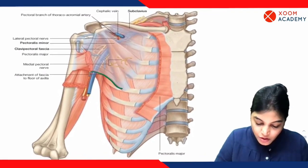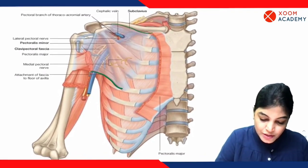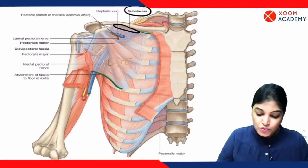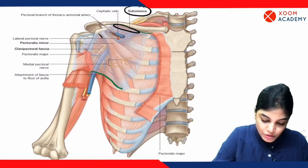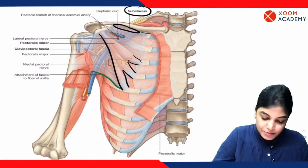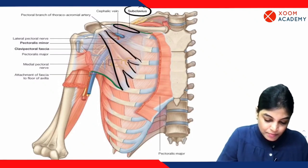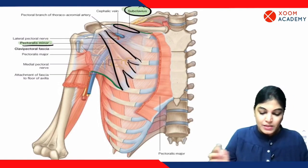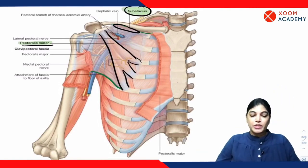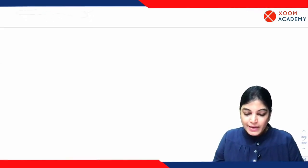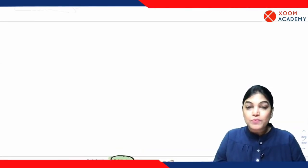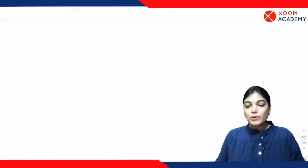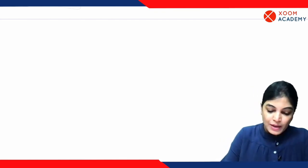Let me show you this diagram again, where you can see the whole extent of the clavipectoral fascia. You can clearly appreciate it is enclosing the subclavius muscle inferior to the clavicle bone, and it is enclosing the pectoralis minor muscle. So two muscles — subclavius and pectoralis minor — are enclosed by the clavipectoral fascia. Now let's talk about the horizontal extent, looking at the medial and lateral attachment of the clavipectoral fascia.